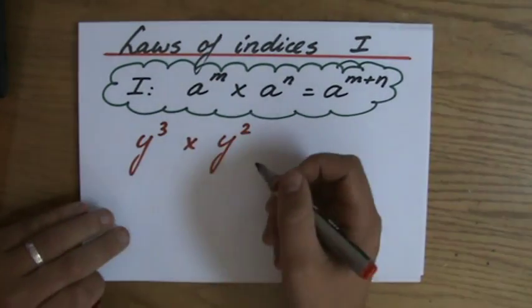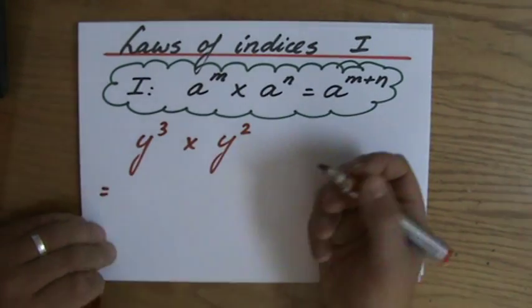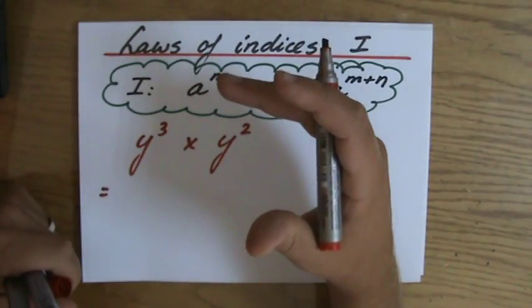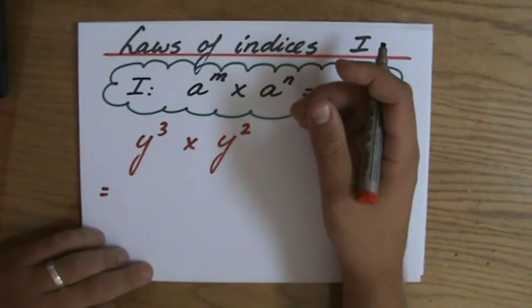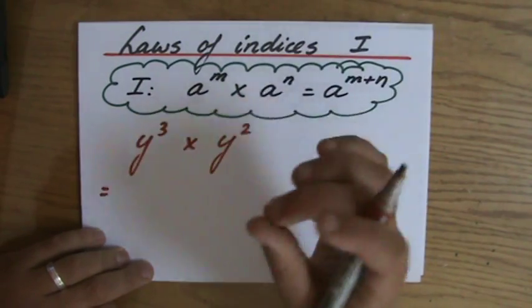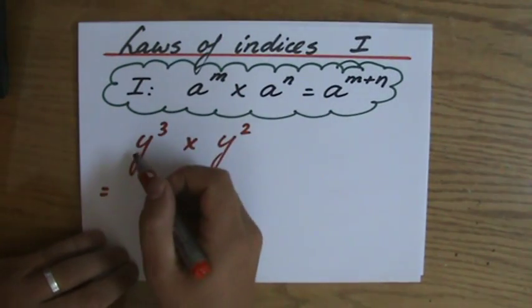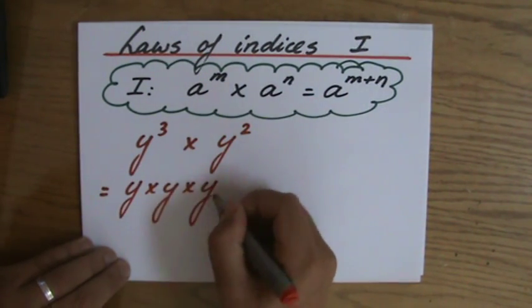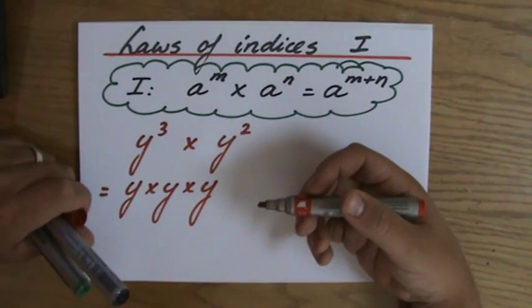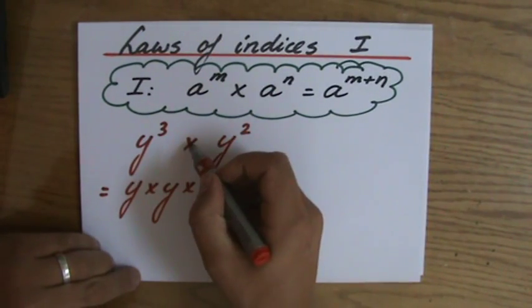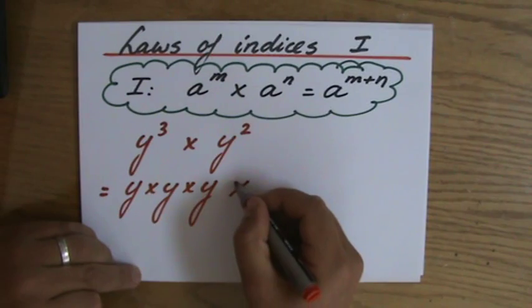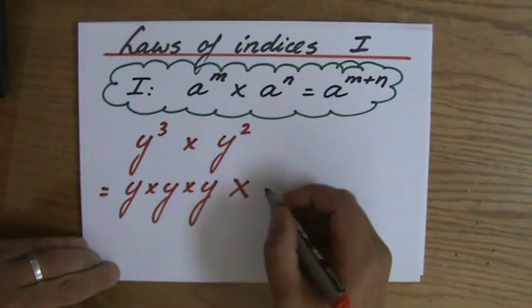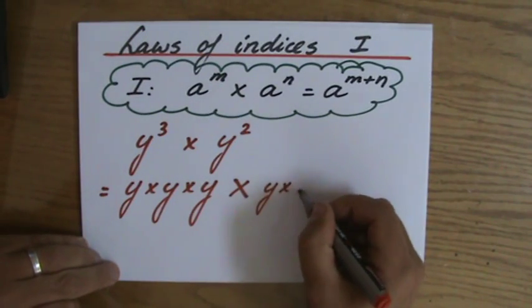Now I'm going to show you why it is y to the power 5. y to the power 3 — what does that mean? Does that mean 3 times y? No, it does not mean 3 times y. y to the power 3 means y times y times y. Times y to the power 2 — now what does y to the power 2 mean? That means y times y.